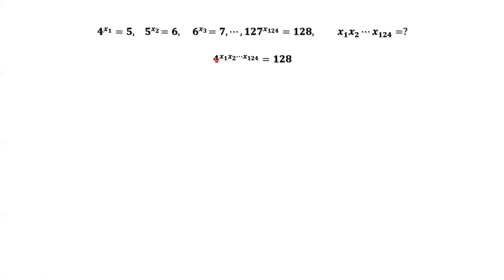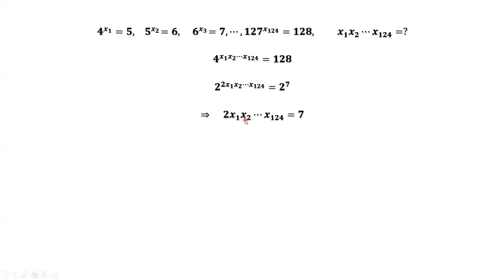Since 4 equals 2 to the power of 2, the left-hand side is 2 to the power of 2 times x1 times x2 times, until, times x124. The right-hand side is 2 to the power of 7, which is 128. Comparing powers from both sides of this equation, we have 2 times x1 times x2 times, until, times x124 equals 7. Therefore, the product x1 through x124 equals 7 over 2.